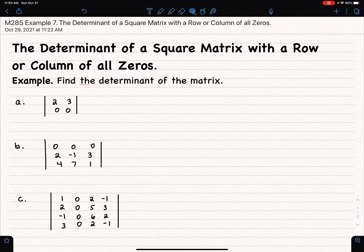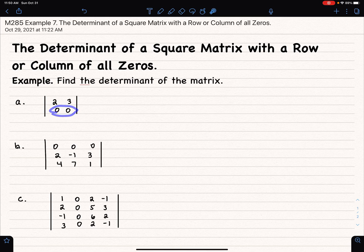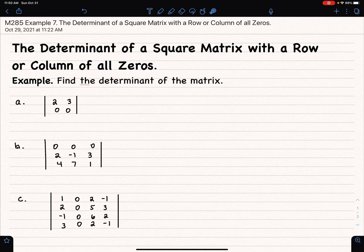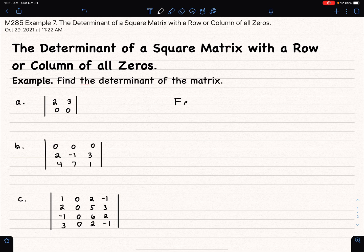Hello, in this video we're going to look at square matrices that have either a row or a column consisting of all zeros, and we're going to find the determinant. We use this fact that says if a